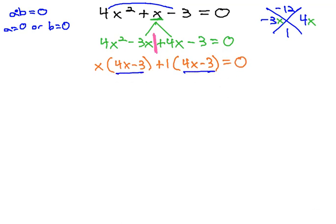The 4x minus 3 is the matching binomial factor, and so 4x minus 3 is one factor. The other factor is x plus 1, and it still equals 0.